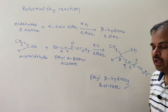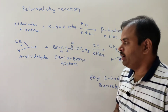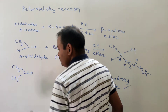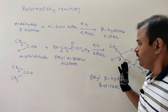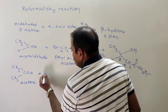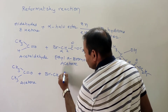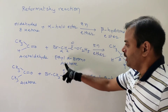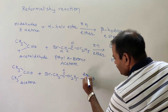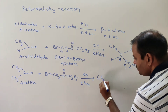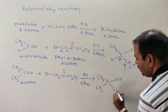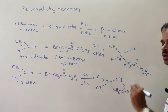Both aldehydes and ketones undergo the Reformatsky reaction. For the ketone example, acetone (CH₃–C=O–CH₃) reacts with the same ethyl alpha-bromoacetate (BrCH₂COOC₂H₅) in the presence of zinc and ether to give the product: (CH₃)₂C(OH)CH₂COOC₂H₅.